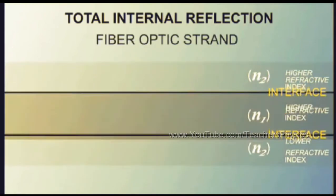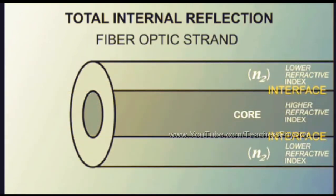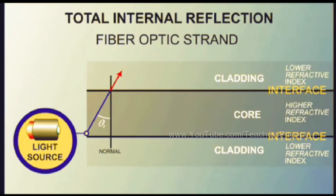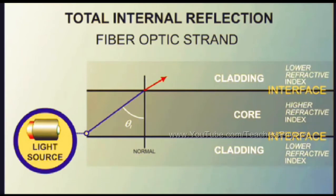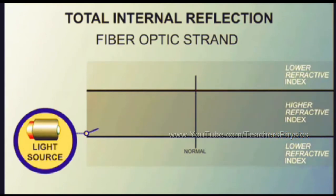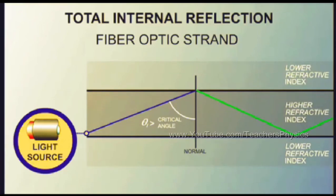This is the principle that enables light to travel through a fiber optic strand. The core has a higher refractive index than the surrounding cladding. A light wave from the core will increase in speed when it enters the cladding. As the angle of incidence becomes greater, the angle of refraction approaches the boundary. If the refracted light wave travels along the boundary between core and cladding, it is known as the critical angle. If the angle of incidence exceeds the critical angle, the light will be reflected with no refraction — this is known as total internal reflection.